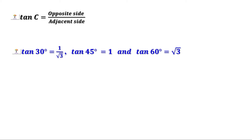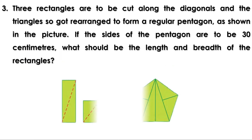There was a homework. Let us check the answer now. Three rectangles are to be cut along the diagonals and the triangles are rearranged to form a regular pentagon as shown in the picture. If the sides of the pentagon are to be 30 centimeters, what should be the length and breadth of the rectangles?